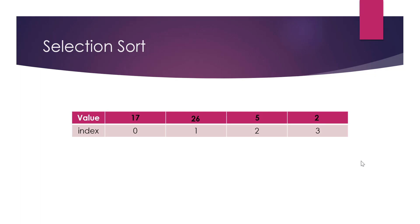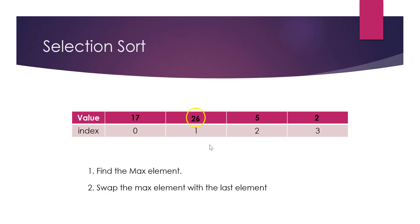How does the selection sort algorithm work? We start by finding the maximum element in our array. Once we find that maximum element — which is 26 at location 1 — we swap it with the last element in the array. So we swap 26 with 2, placing 26 at the end and 2 going back to index 1.